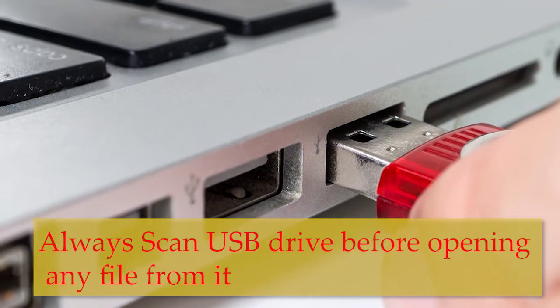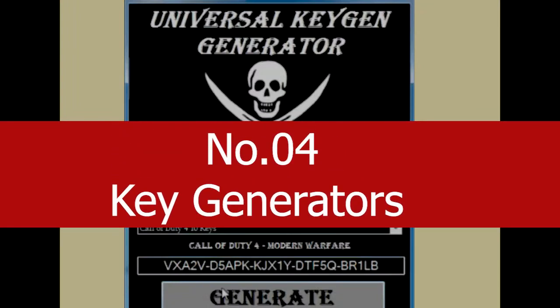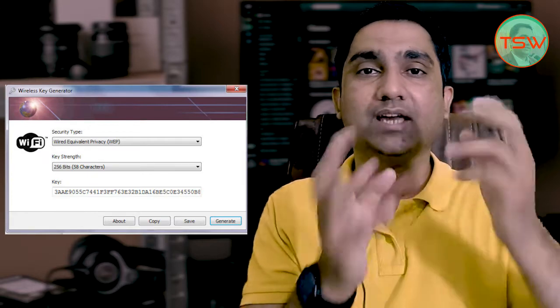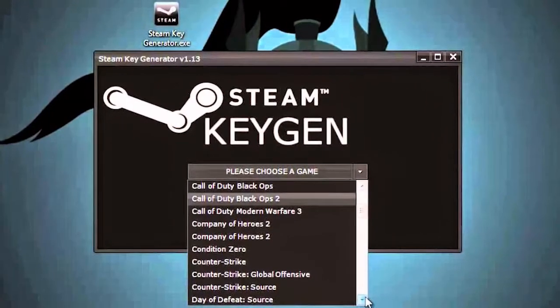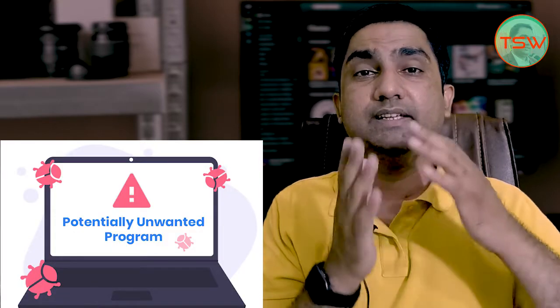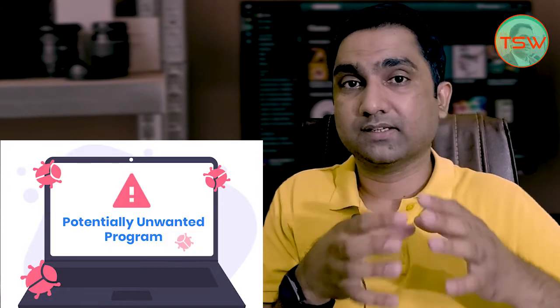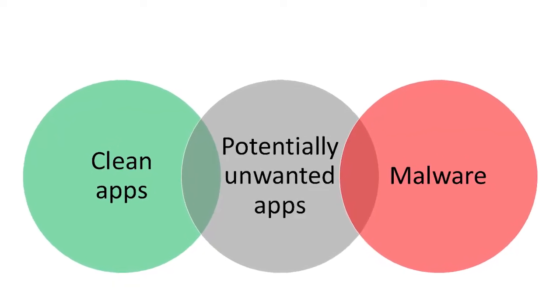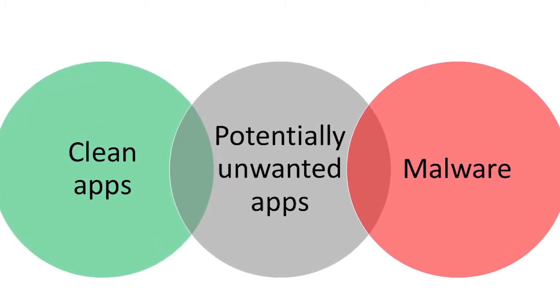The next source of malware is key generators. If you use cracked or pirated software, most of the time you get a key generator in the ISO or ZIP file. If you open the key generator to generate a key, more than 50 percent of the time the software installed through key generators will get malware installed on your PC. Key generators are considered potentially unwanted applications — from Windows Defender and Microsoft's point of view, key gens are declared as potentially unwanted software.